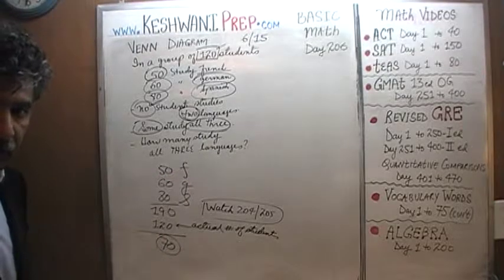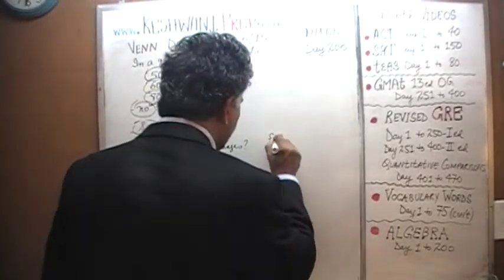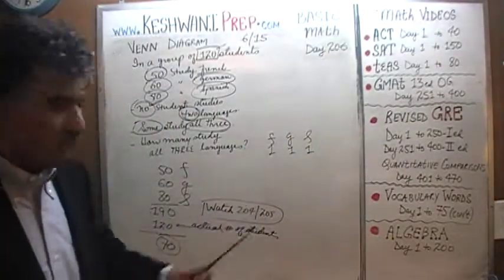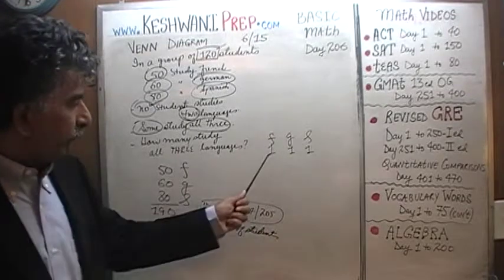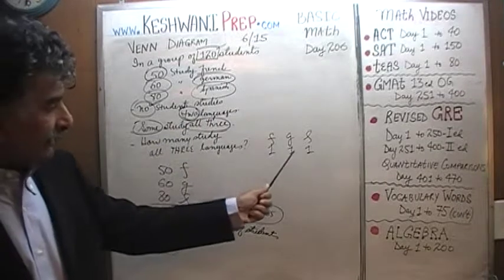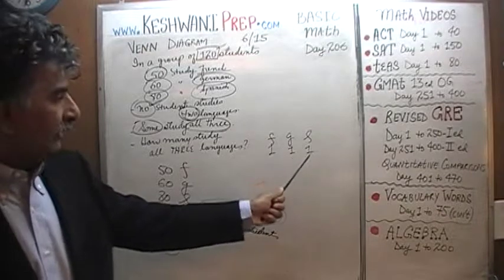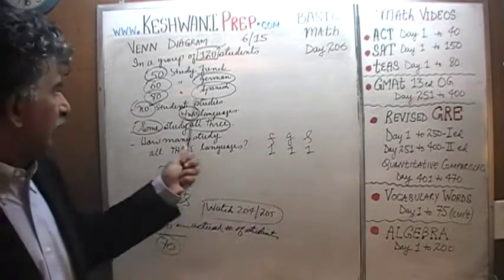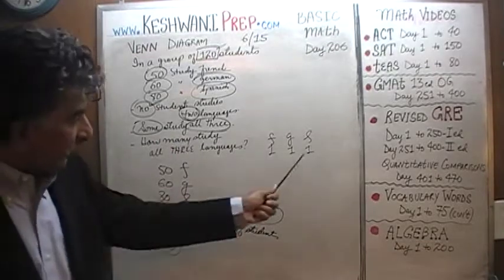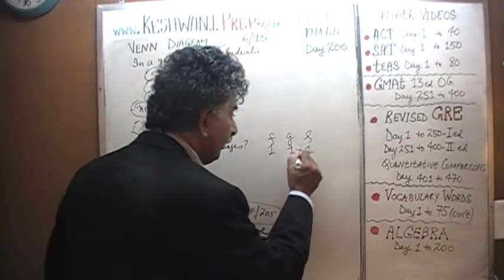How many people are being triple counted? Think about it: if we had one person taking French, German, and Spanish, that one person would be counted in the 50 as a student of French, counted again in the 60 as a student of German, and counted a third time as a person who studies Spanish. That's a triple count — one person counted three times.